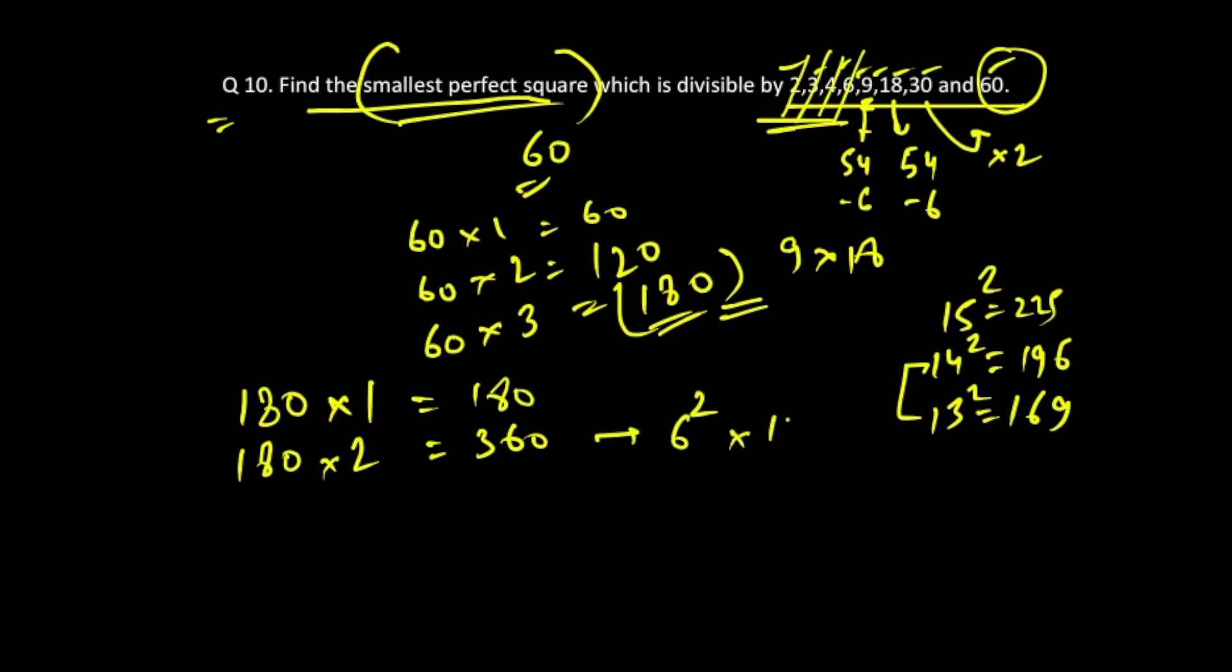Because 360 can be written as 6 square into 10. This will give you a perfect square, but 10 is not a perfect square, hence 360 is also not a perfect square.